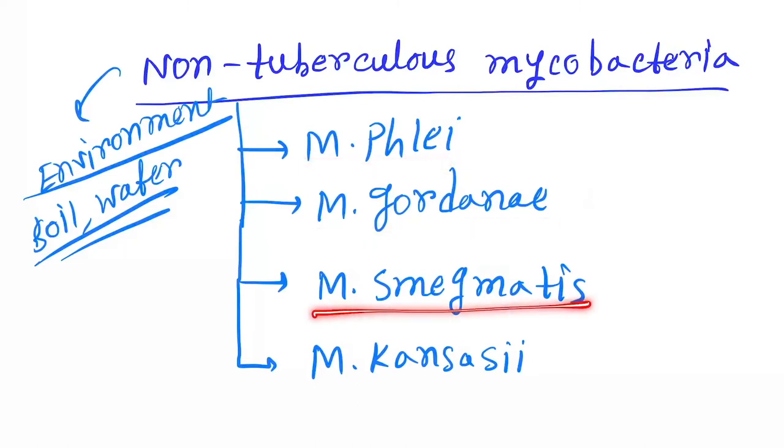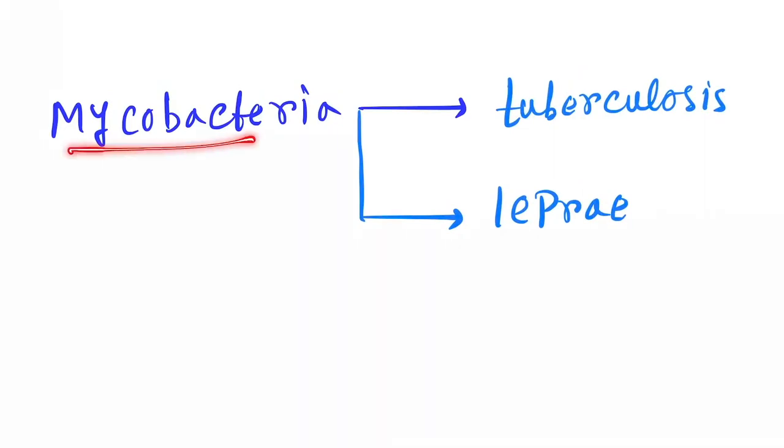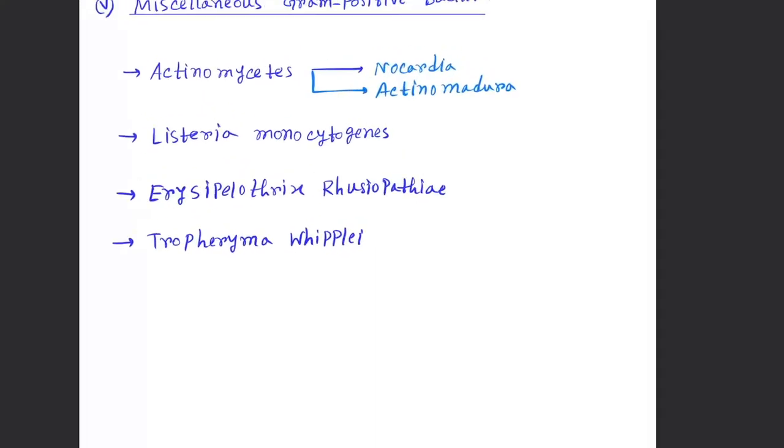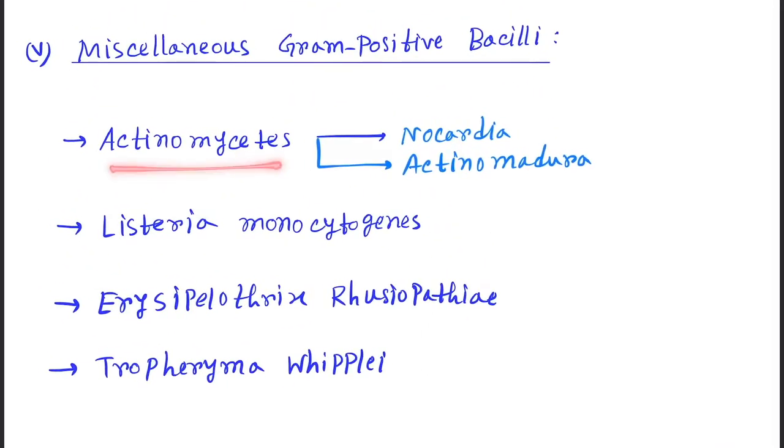Next, the Mycobacterium species is tuberculosis and leprae. These two are main. Now the miscellaneous gram positive bacilli. So Actinomyces, Listeria monocytogenes, Erysipelothrix rhusiopathiae, and Tropheryma whipplei.